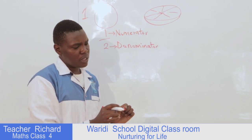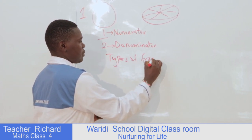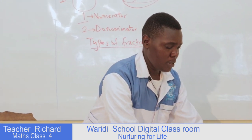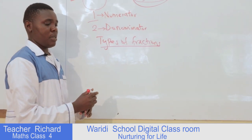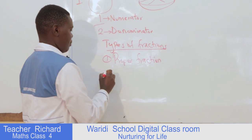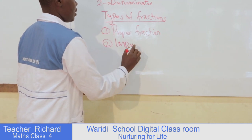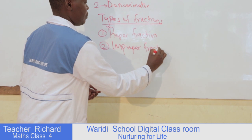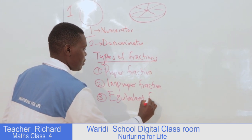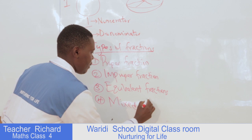Before we come to operations on fractions, we shall deal with the types of fractions. I will state the four of them, and then we shall discuss them one by one. The first one is called the proper fraction. The second one is called the improper fraction — the opposite of the first one. The third one is equivalent fractions, and finally we shall discuss mixed fractions.